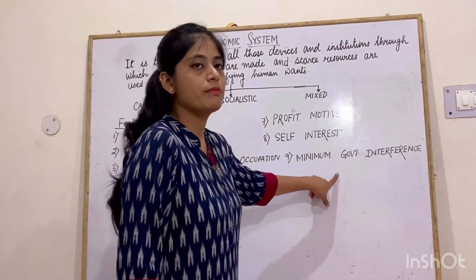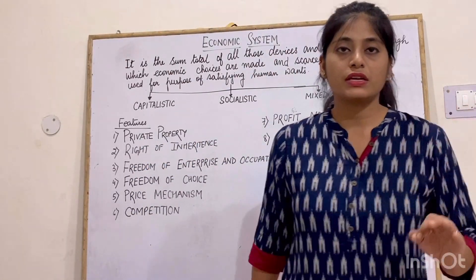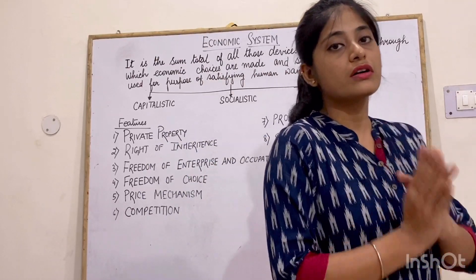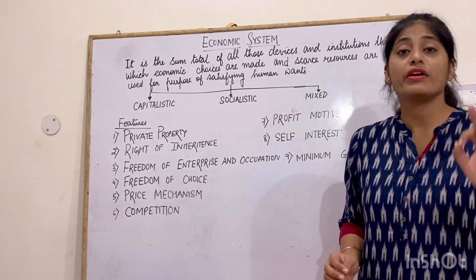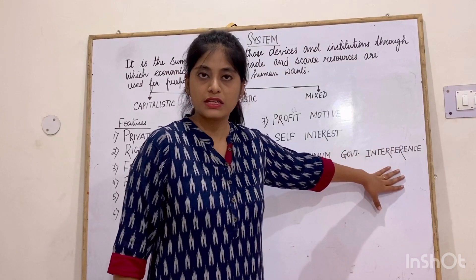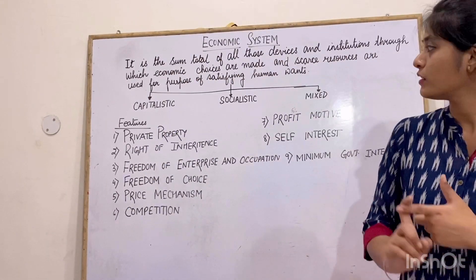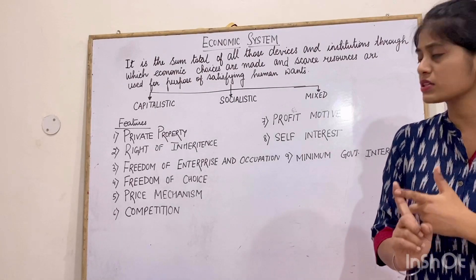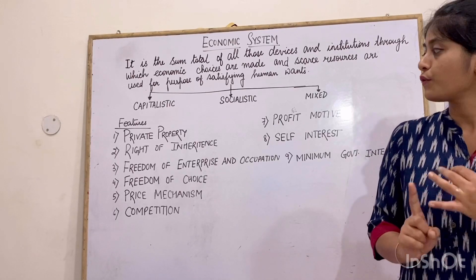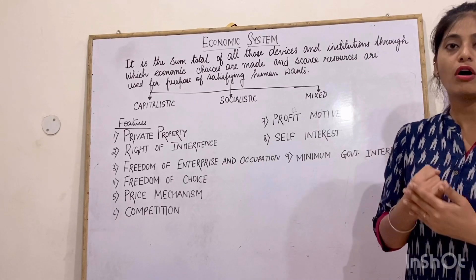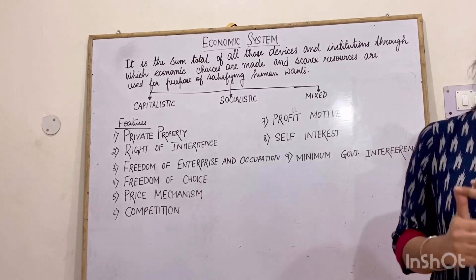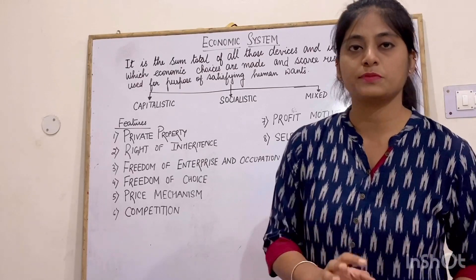Next is minimum government interference. The interference of the government is minimum — government doesn't interfere in the workings of the private individual. Let's recall all the features: one is private property, second is right of inheritance, third is freedom of enterprise and occupation, fourth is freedom of choice, fifth is price mechanism, sixth is competition, seventh is profit motive, eighth is self-interest, and ninth is minimum government interference. You will learn only six points out of these.